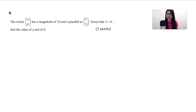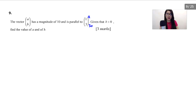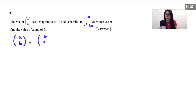Let's look at question number 9 — vectors again. The vector AB has a magnitude of 10 and is parallel to (1, 3). Given that b is positive, find the value of a and of b. This is 3 marks. Since it's parallel to (1, 3), the bottom component will be 3 times the top one: so we let the vector be (a, 3a). Therefore AB equals (a, 3a).